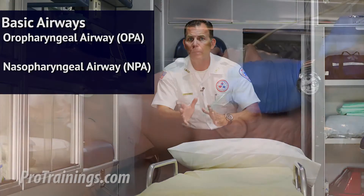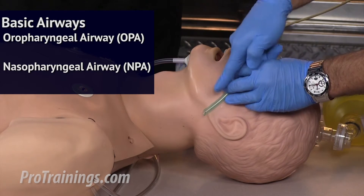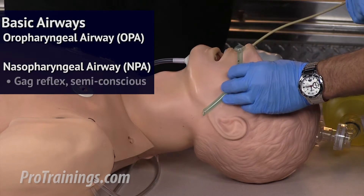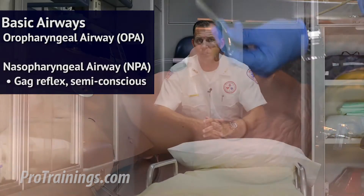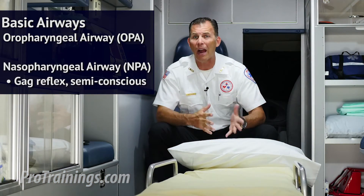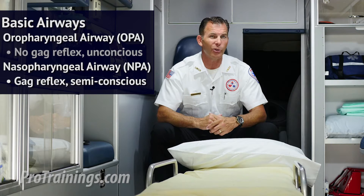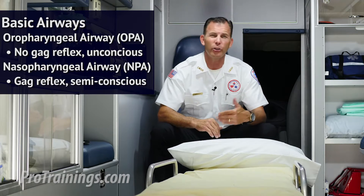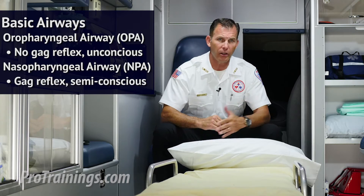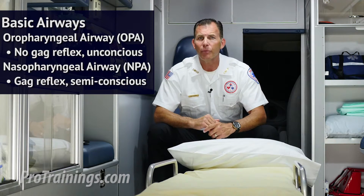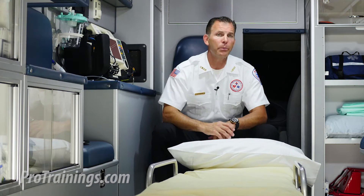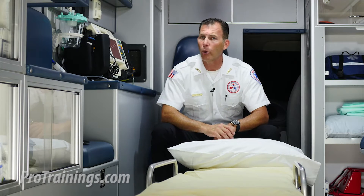The NPA is a basic airway that should be inserted in patients who have a gag reflex and may be semi-conscious, while an OPA is primarily used for those patients who don't have a gag reflex and are usually unconscious. The correct sizes of the OPA and NPA are very important in order to not cause further harm, or in some cases even block the airway altogether.